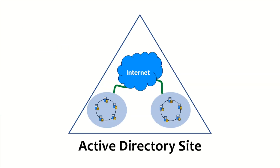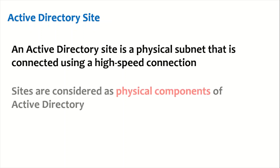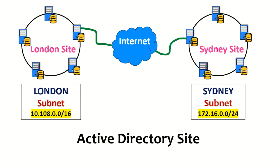Let us understand the first concept: what is an active directory site and why we require one. An active directory site is a physical subnet that is connected using a high-speed connection. A site is considered a physical component of active directory, and active directory sites are connected using site links. We are going to configure sites and site links in our labs as well.